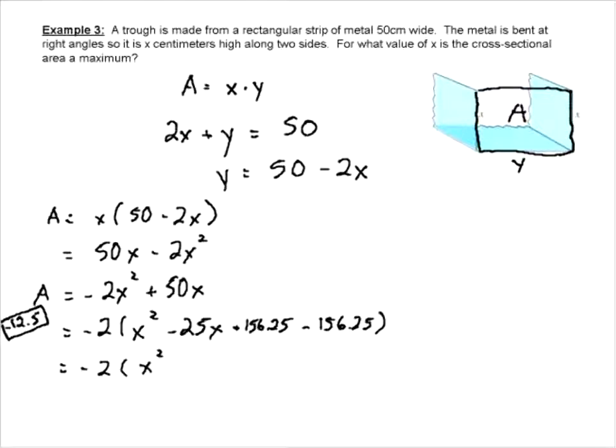And as always, we want to keep that positive one inside the bracket. And outside the bracket, we take the 156.25, multiply it by 2, and they're both negative, so we get plus 312.5. And it's all said and done, we have an area equation that is negative 2 times x minus 12.5 all squared plus 312.5. So there is our quadratic.